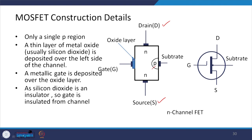The metal oxide layer is usually silicon dioxide and is placed between the channel and the metallic gate deposited on top. Since silicon dioxide is an insulator, the gate is insulated from the channel. Symbolically, the MOSFET has four terminals: substrate, gate, drain, and source.